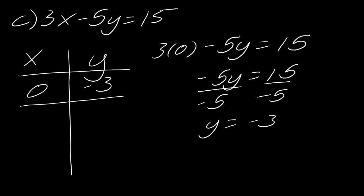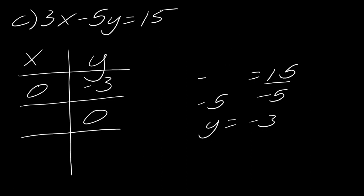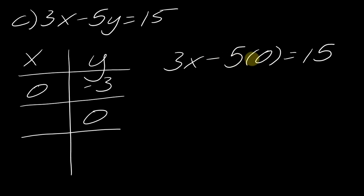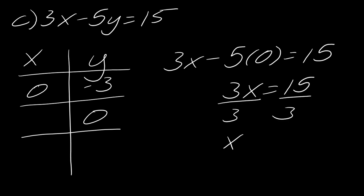Here's the thing: in this particular problem, because of how it's laid out, it's actually pretty simple to put in 0 for y as well. Plugging in y = 0: 3x − 5(0) = 15. That term drops out, leaving 3x = 15. Divide both sides by 3 to get x = 5. Sometimes it works out that both intercepts are easy to find.